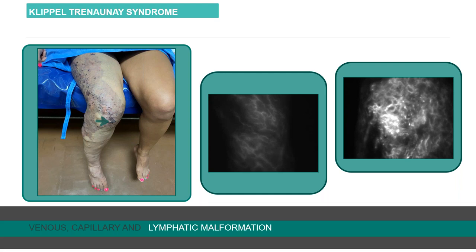In another type of malformation — Klippel-Trénaunay syndrome — which is a combined venous, capillary, and lymphatic malformation, we can use ICG to observe the commitment of the lymphatic system. You can see the patient with hemorrhagic lymphangiectasia, and we can detect the lymphangiectasia with ICG. It's very interesting to know more about the lymphatic involvement in this type of combined malformation.